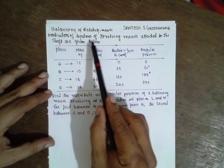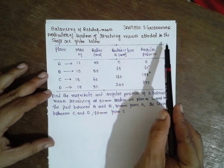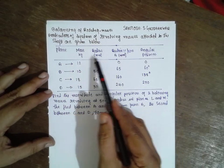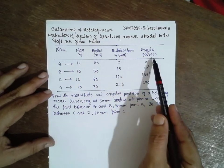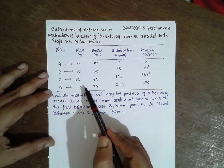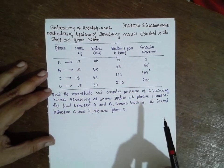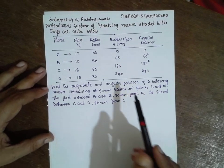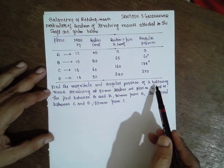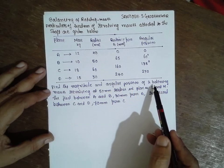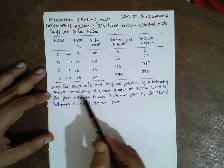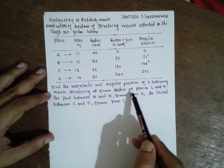The particulars of the system of revolving masses attached to the shaft are given below. The chart gives four planes with their masses, radius, distance, and angular position. We have to find out the magnitude as well as the angular position of two balancing masses revolving at 50 mm radius in the planes L and M.